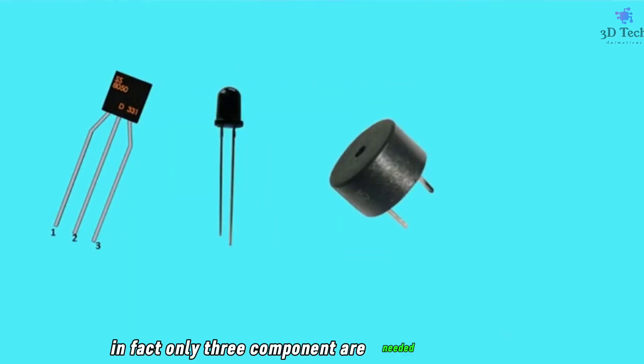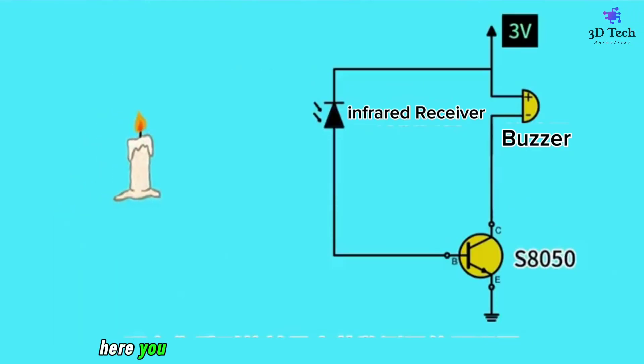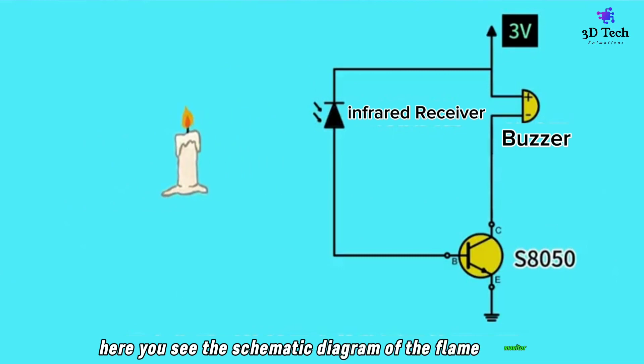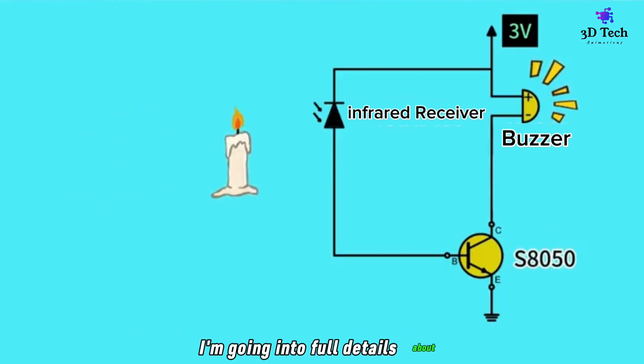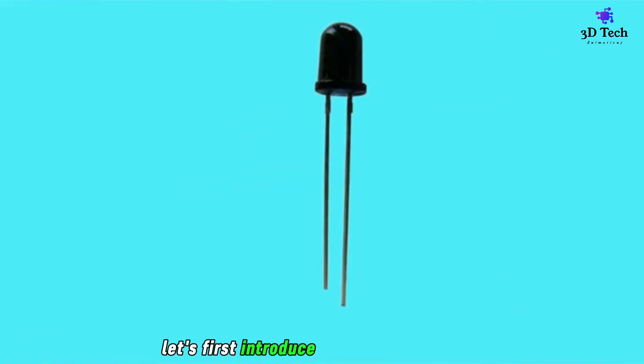In fact, only three components are needed to avoid fires. Here you see the schematic diagram of the flame monitor. I'm going into full details about how this circuit is made and how it works. Let's first introduce the infrared receiver, 8050 transistor, and buzzer.